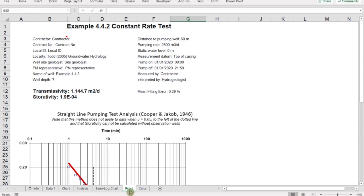If we go to print, you can see the error here, the mean fitting error of 0.29 percent. And all the information which we entered previously in the data sheet is now coming up here automatically. And you can see the transmissivity has been calculated, as has the storativity.